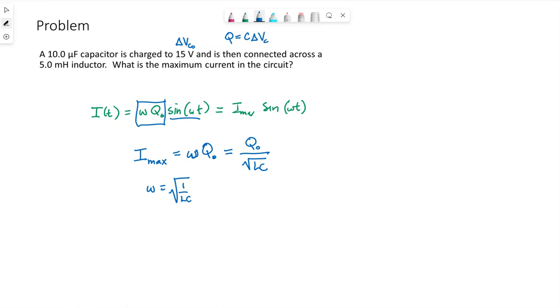So the initial charge will depend upon this initial voltage. We can substitute C*ΔV_initial for the capacitor over the square root of LC.